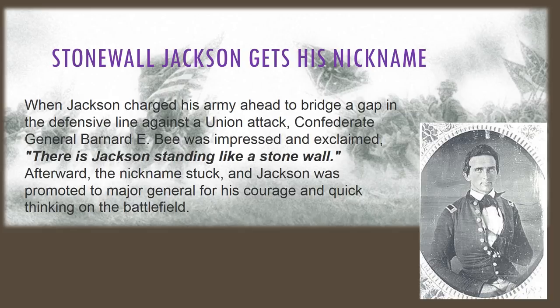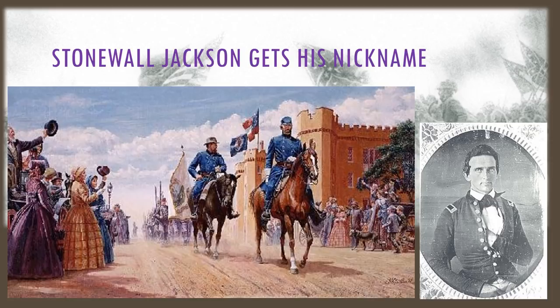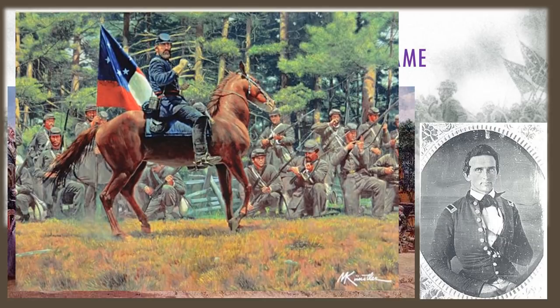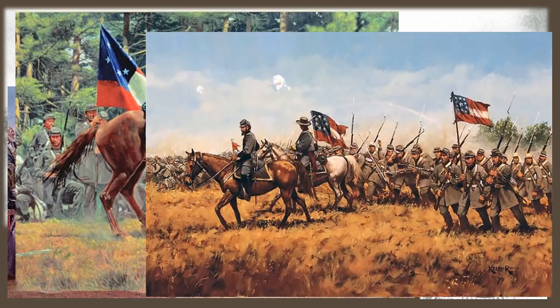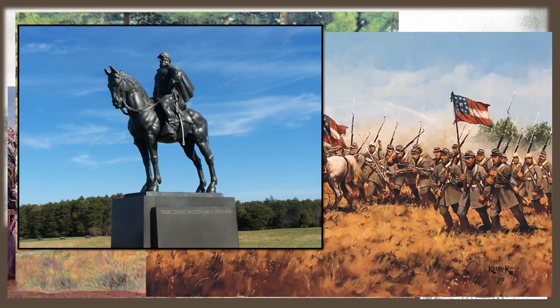Confederate General Stonewall Jackson earns his nickname, Stonewall, during the First Battle of Manassas. In the heat of the battle, Jackson charges his army ahead to bridge a gap in the defensive line against a Union attack. It was during this maneuver that another Confederate general, Barnard B., looked up and saw Jackson and his men on the hill, and encouraged his own men by exclaiming, 'There is Jackson, standing like a stone wall.' Afterward, the nickname stuck and Jackson was promoted to Major General for his courage and quick thinking on the battlefield. Go ahead and draw your own version of this event and Jackson and his men standing like a stone wall at the top of the hill.